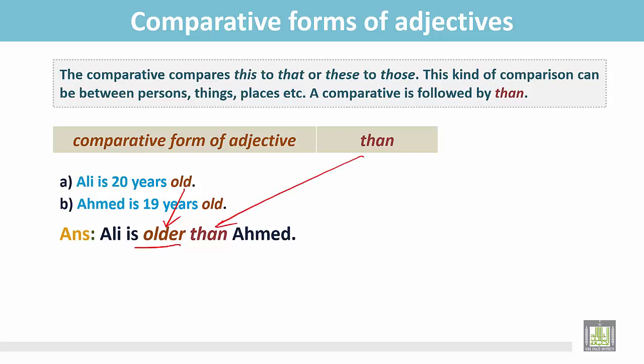Then we place than and after that we write the second subject here. In this sentence, Ali is older because he is 20 years old and Ahmed is 19 years old.